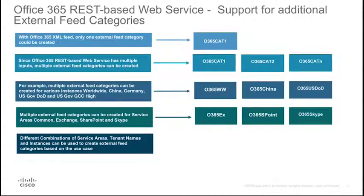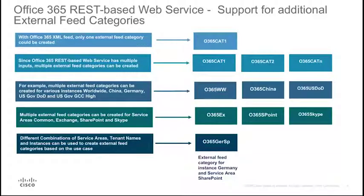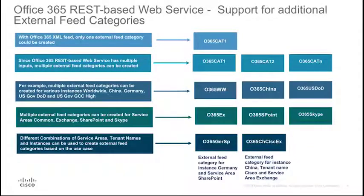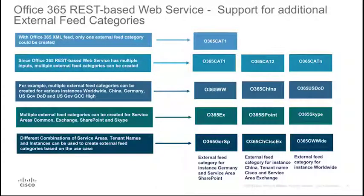Admins can use various combinations of service areas, tenant names, and instances to create different external feed categories based on their use case. For example, customers can create one external feed category for instance Germany and Service Area SharePoint; another for instance China, tenant name Cisco, and Service Area Exchange; and a third external feed category for instance Worldwide. As we can see, WSA is adding new capabilities by supporting Office 365 external feed categories using REST API-based web service.